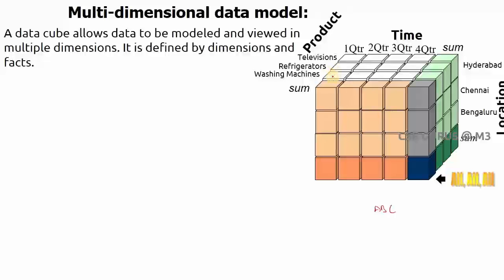In this data cube, if I write the value 1275 in a particular box, it means the total sales of washing machines in the first quarter for Hyderabad. So 1275 represents total sales in Hyderabad in the first quarter for the product washing machine.